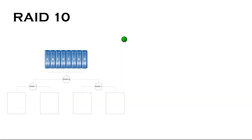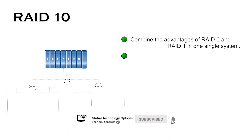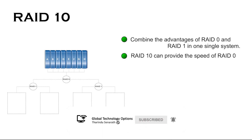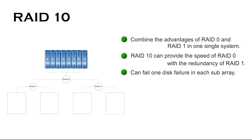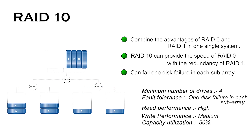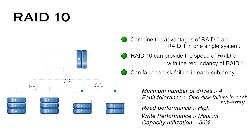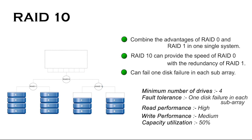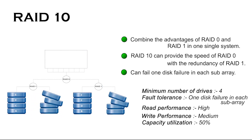RAID 10 consists of a minimum of four drives and combines the advantages of RAID 0 and RAID 1 in one system. It provides security by mirroring all data on secondary drives while using striping across each set of drives to speed up data transfers. This means RAID 10 can provide the speed of RAID 0 with the redundancy of RAID 1. Just like RAID 1, only half of the total drive capacity is available. You can lose any single drive and possibly one disk failure in each subarray.